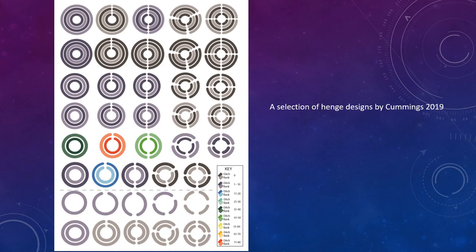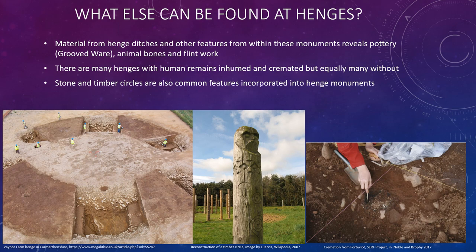The artefacts and material goods recovered from henges usually vary from Grooved Ware pottery, animal bone and flint work. This suggests that people are bringing animals to these places to feast, to sacrifice perhaps, bringing goods within Grooved Ware vessels — dairy products, maybe even alcohol — and they're also processing all of these at the site, which is shown by the evidence of flint working. Human remains are also found at henge monuments, not all of them and generally not in great quantities. Stonehenge is an outlier here with lots of cremations, but Stonehenge is a non-henge anyway according to the classifications. So henges are probably not solely involved with the dead.